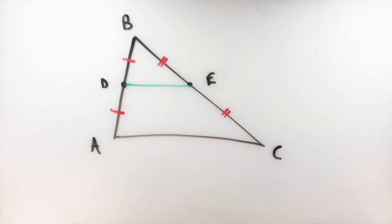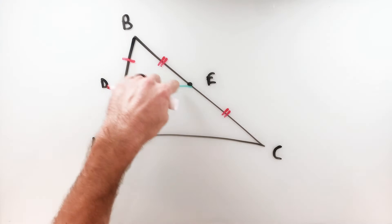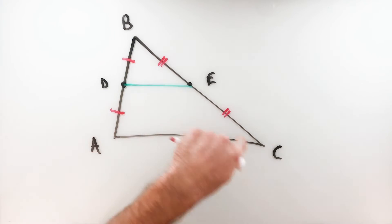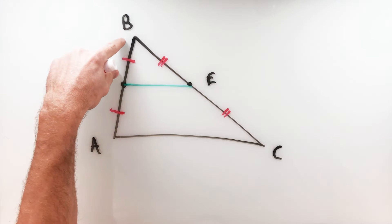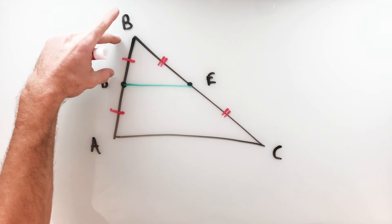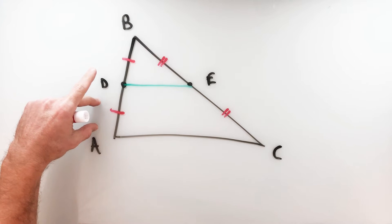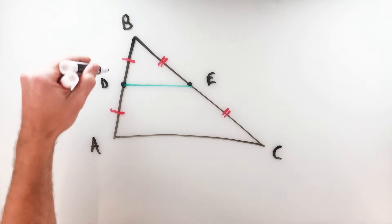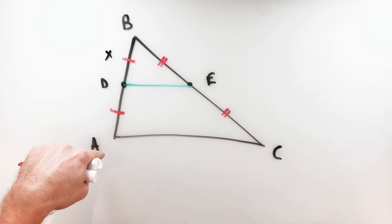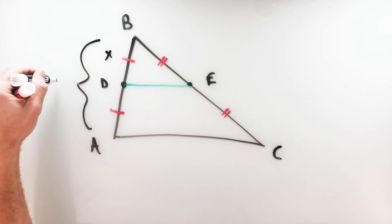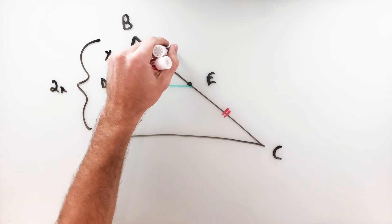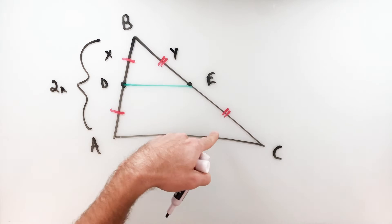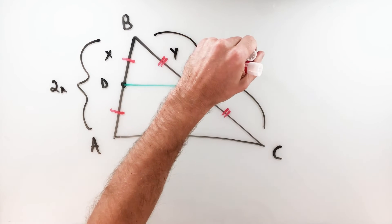What we really have here are two triangles: the small triangle BDE up top, and the big triangle BAC — the whole thing. If we investigate, we have a pair of sides on each triangle. Knowing that DB and DA are the same, if I call DB = x, then the full side AB is 2x. Doing the same on the other side, if BE = y, then BC = 2y.